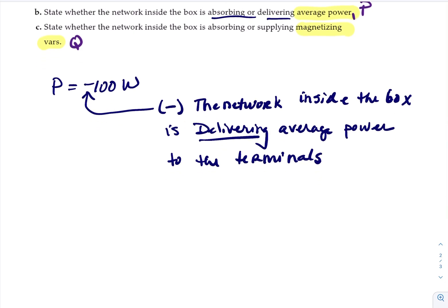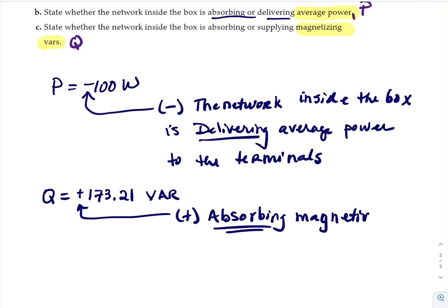And our value for Q or reactive power is positive 173.21 VAR. And that's a positive value. So the network inside the box is absorbing magnetizing vars.